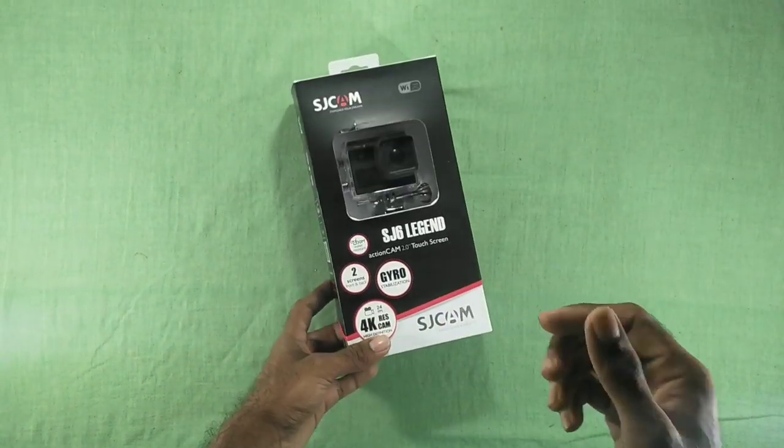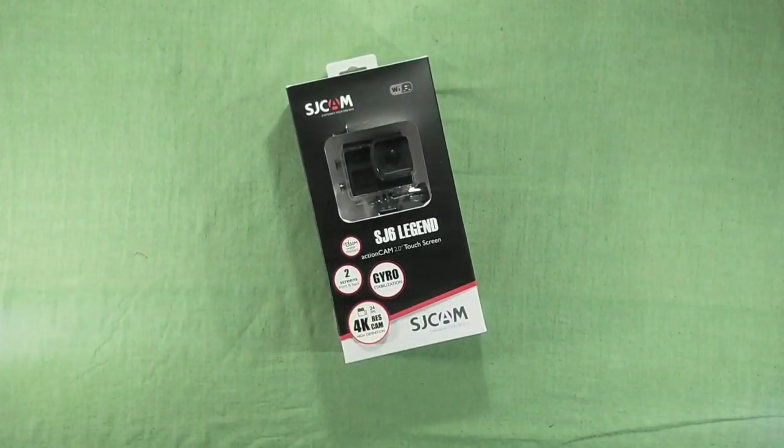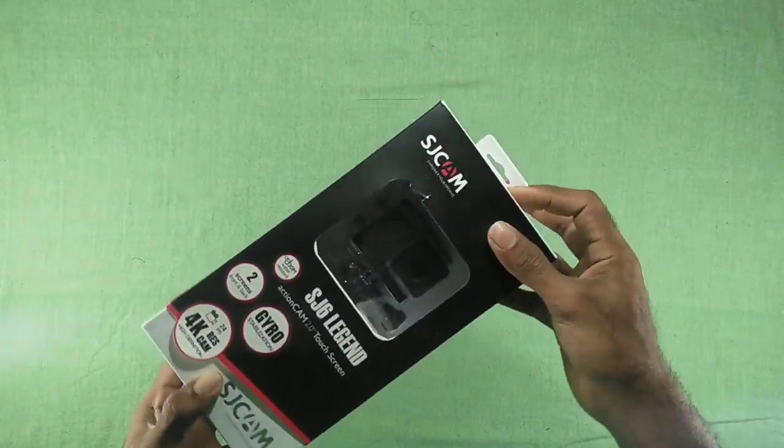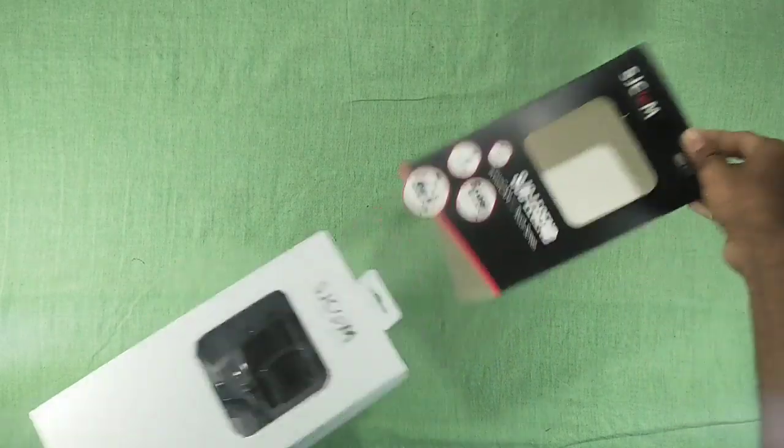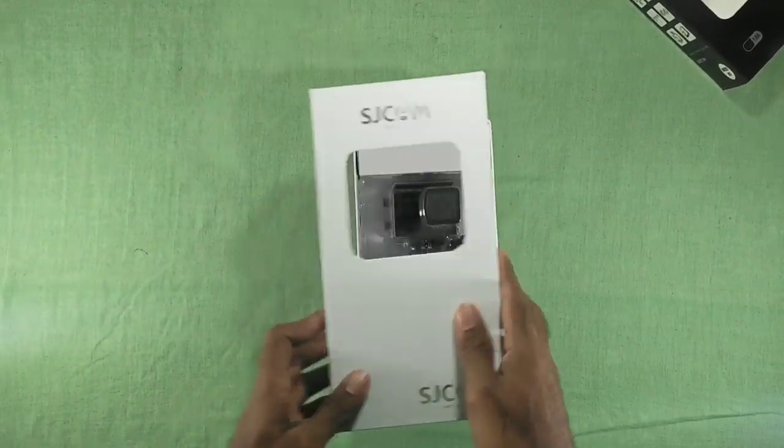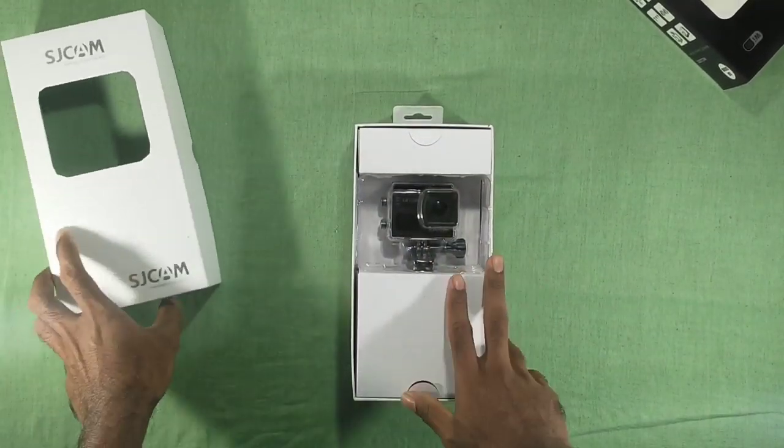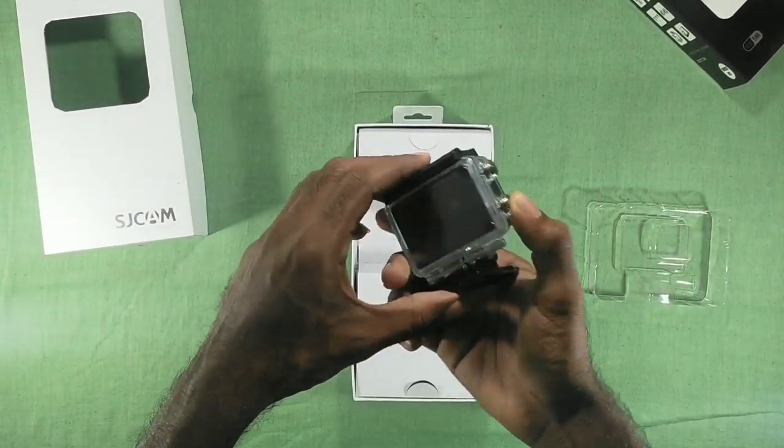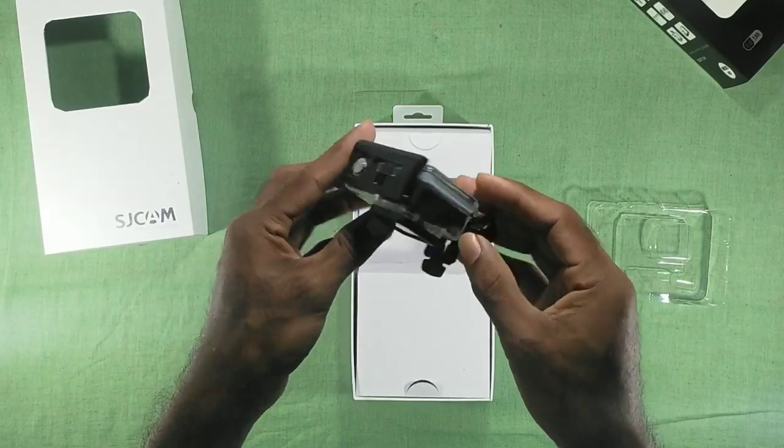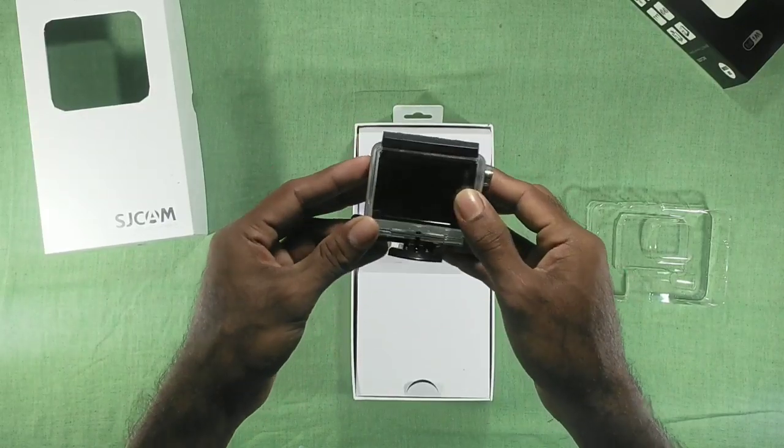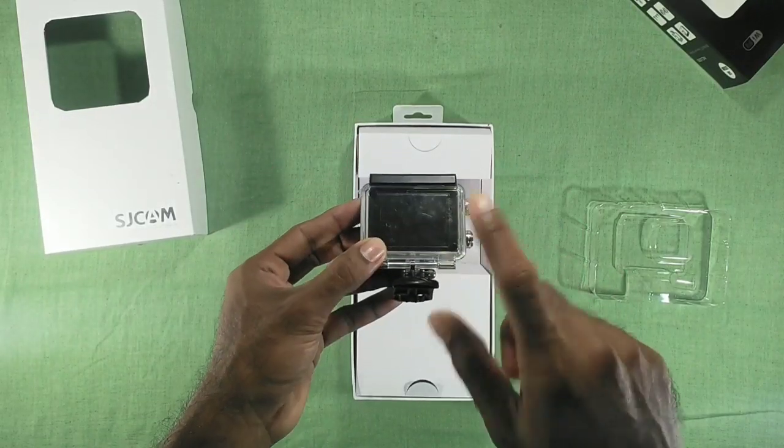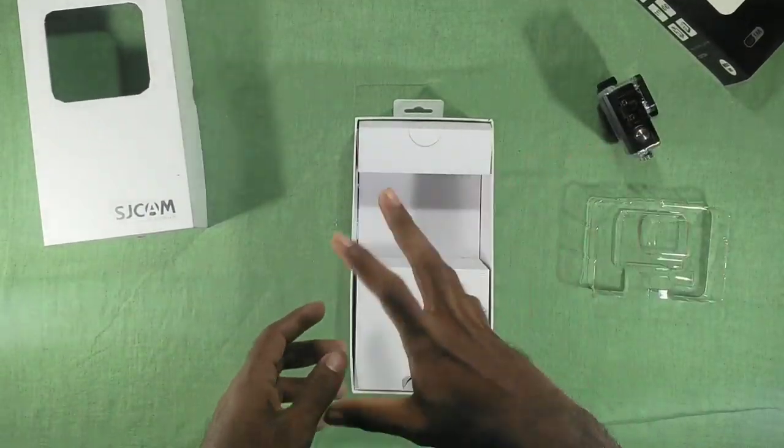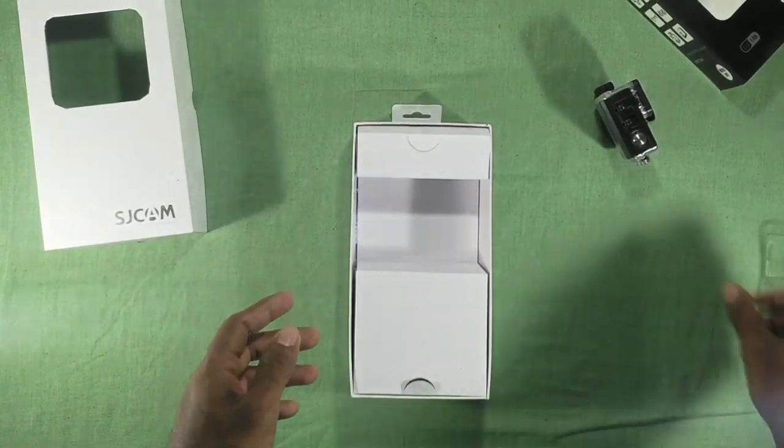Now we can open up the box and see what are the things and accessories provided by SJCAM. Opening up the camera, we can see it right in front of the box—it's inside the water-resistance case, which is a pretty solid case so that we can easily dip the camera inside the water for underwater photography.